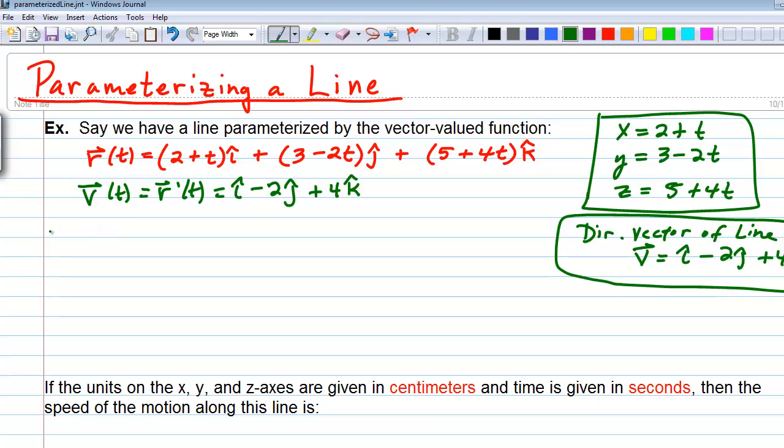So what's the speed in this case? We already have said here that it's a constant velocity, so we can expect the speed to be constant as well. Now, speed of t would here equal the magnitude of the velocity vector, which since it's constant, won't even be a function of t. I suppose it's just a constant function. So here you have 1 squared plus 2 squared plus 4 squared, which is 1 plus 4 plus 16, or the square root of 21.